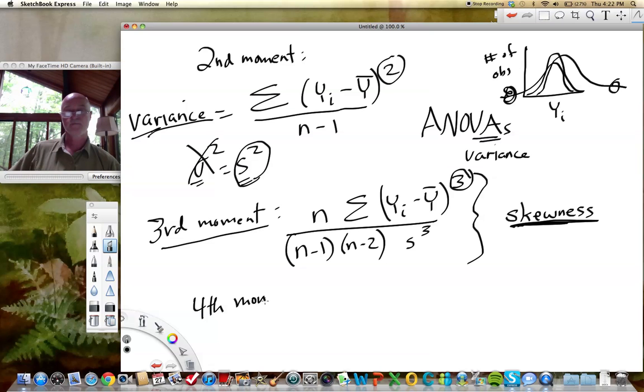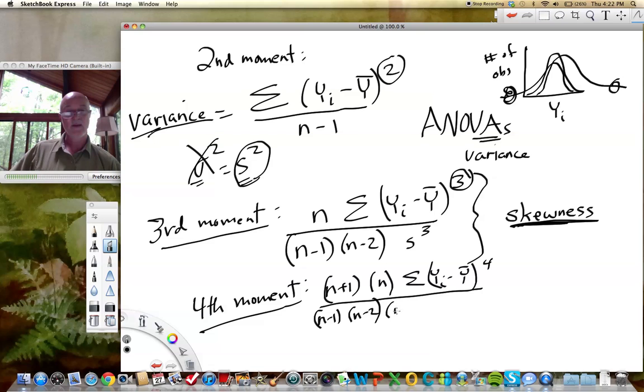What about the fourth moment? The fourth moment is actually another one that's used in statistics, and we're going to again have SASJUMP measure it for us and give us a value for it. It is n plus 1 times n times the summation. What do you think it is? You got it. The deviation of every observation from the mean to the fourth power, all divided by n minus 1 times n minus 2 times n minus 3 times the standard deviation to the fourth power, and then there's another term thrown in here for good measure: minus 3 times n minus 1 quantity squared all over n minus 2 times n minus 3. Again, I don't care that you understand the derivation of this. What I want you to understand is what the quantity is telling you about. It's telling you about something called kurtosis.